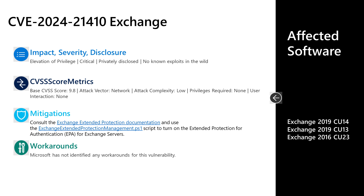For the two older supported versions of Exchange — 2019 CU13 and 2016 CU23 — there is an extra step required. If you're using the latest version, Exchange 2019 CU14, installing the cumulative update protects you by default. There are no known workarounds for this vulnerability. If you're unsure whether extended protection has been enabled, there is an Exchange Server Health Checker script that can be run to tell you whether extended protection for authentication has been enabled. More details and links can be found in the CVE article for this vulnerability.